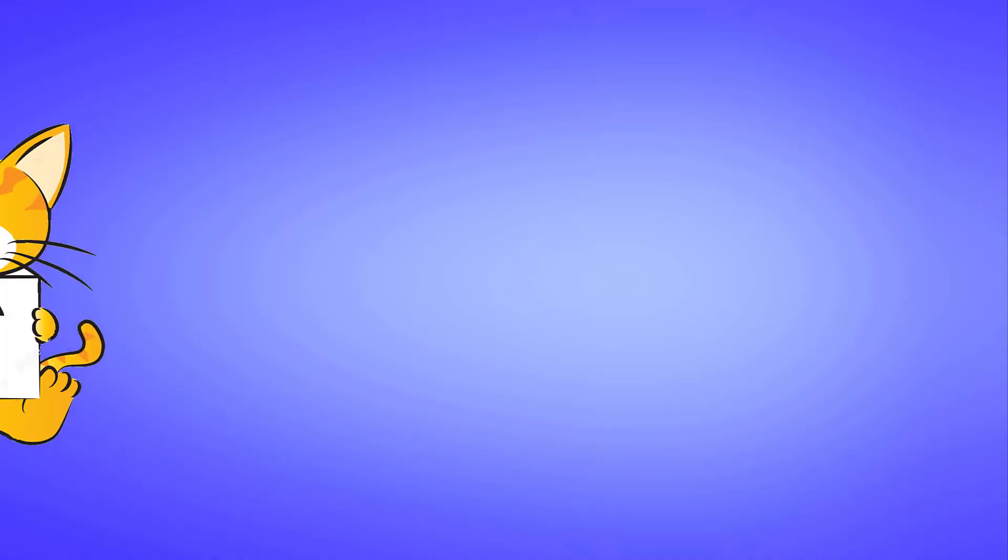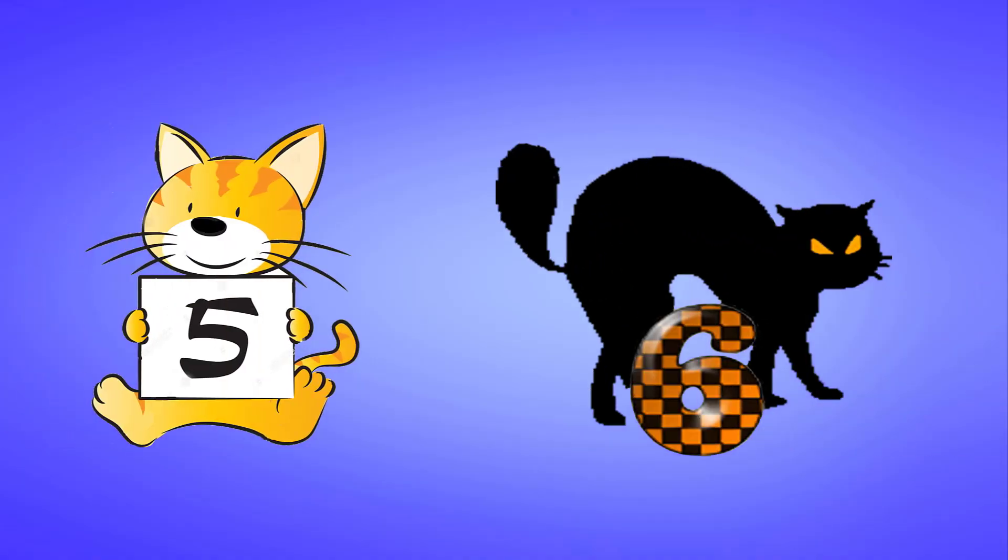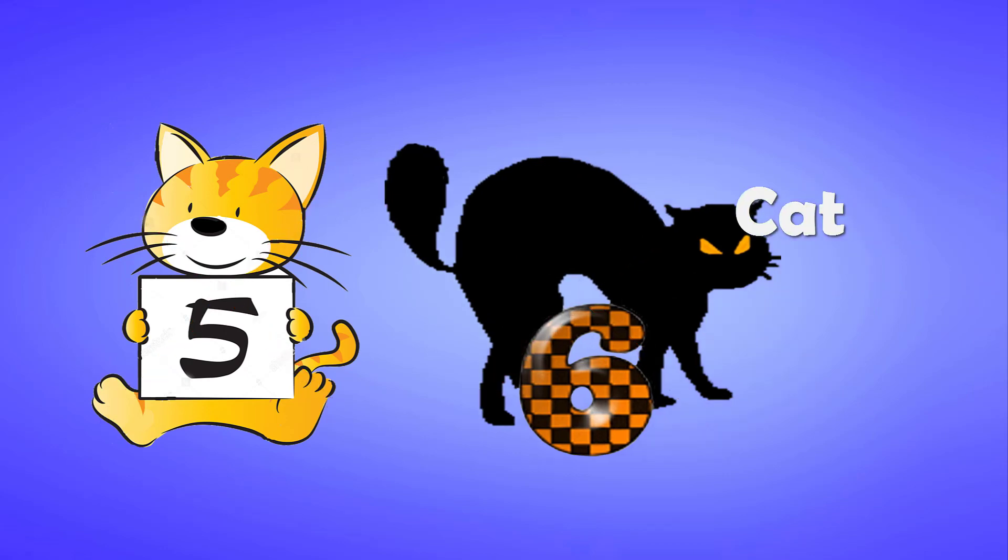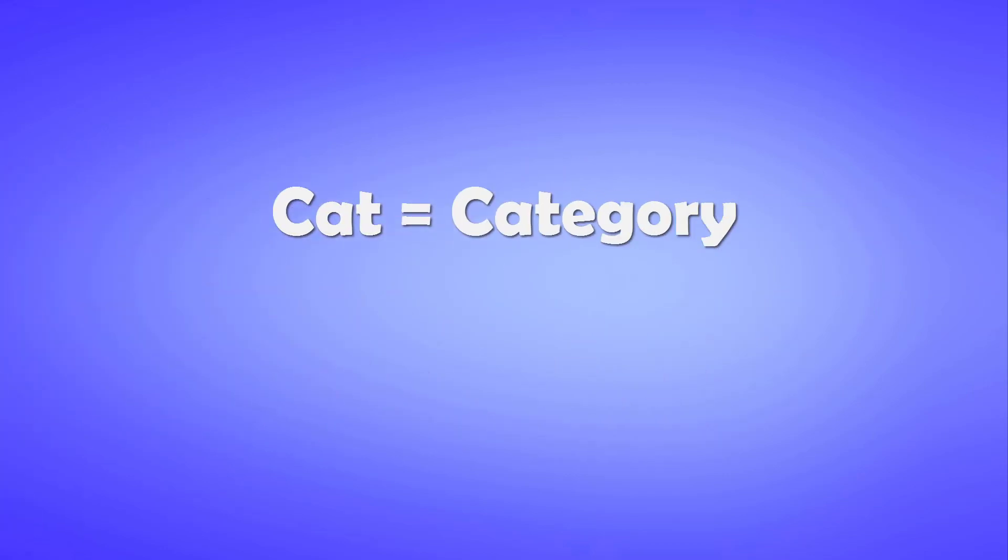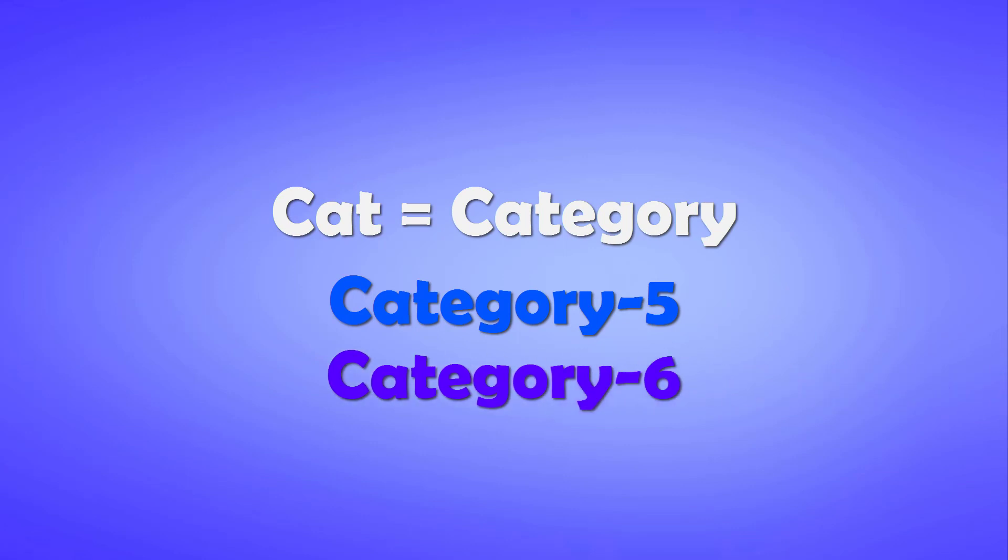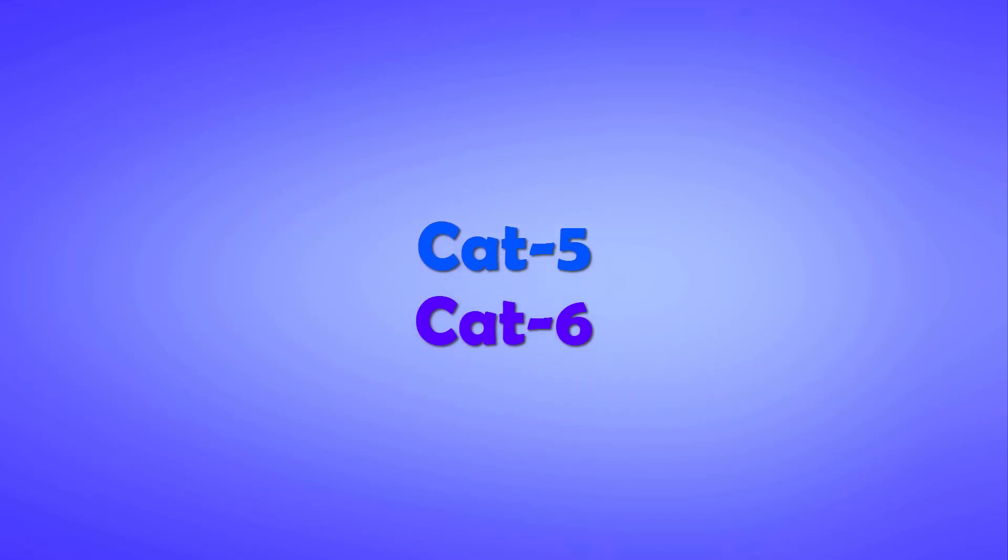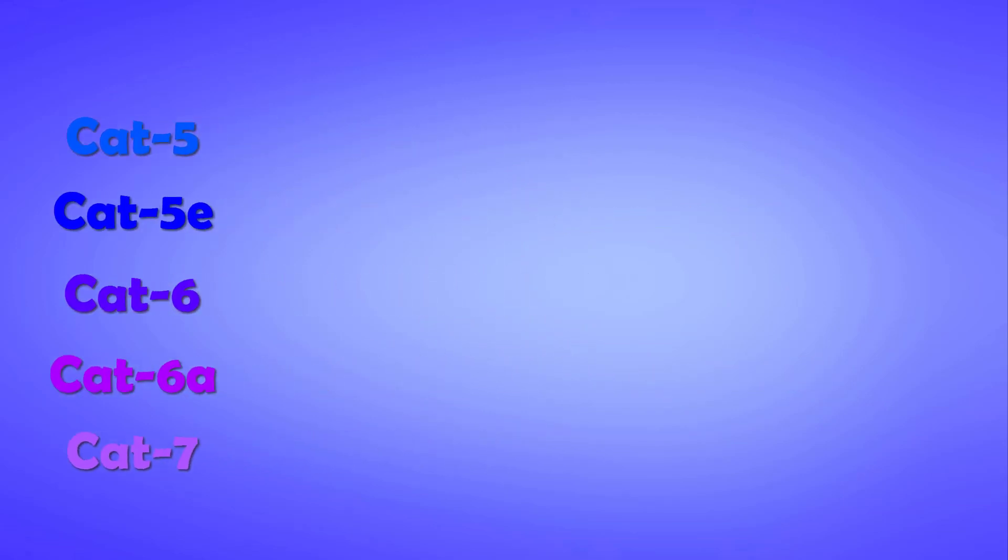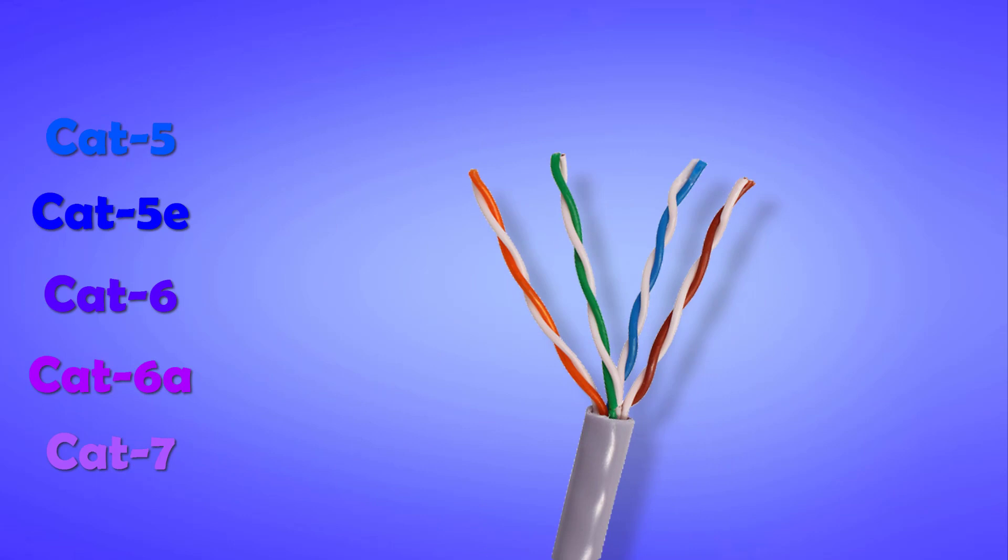First of all, Cat5 or Cat6 don't have any connection with any cat in any way, but this cat is short for category. This means category 5 and category 6 Ethernet cables. You will also find Cat5e, Cat6a, and Cat7 Ethernet cables in the market. All these categories are 4 pair cables and you will find a green, orange, blue, and brown pair within these cables.